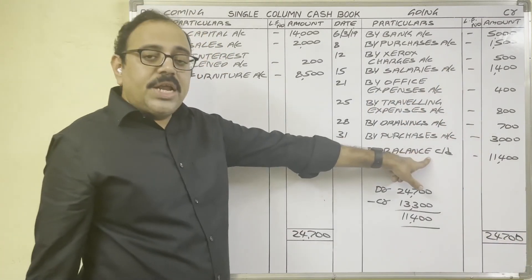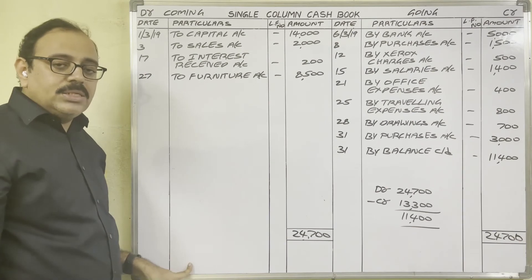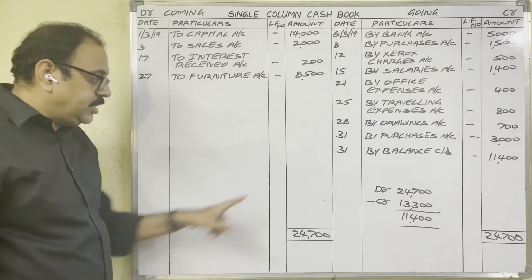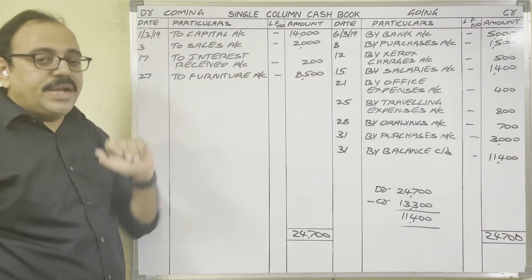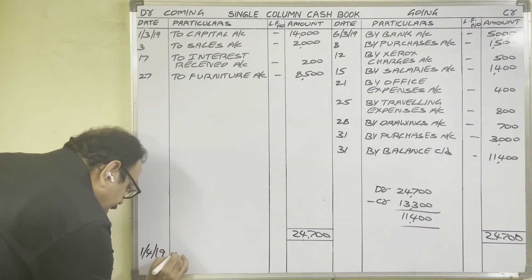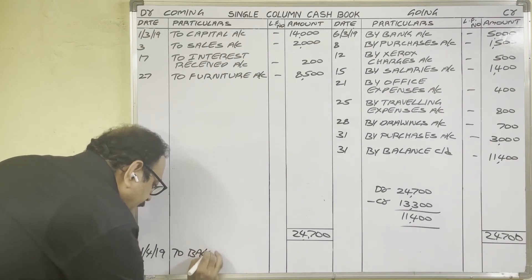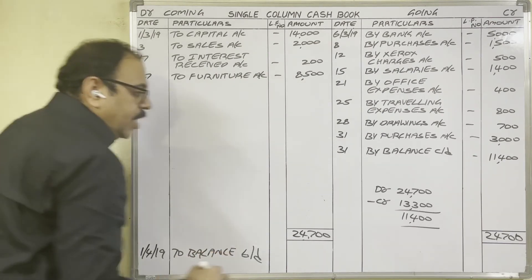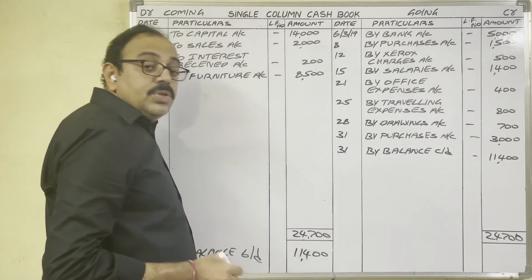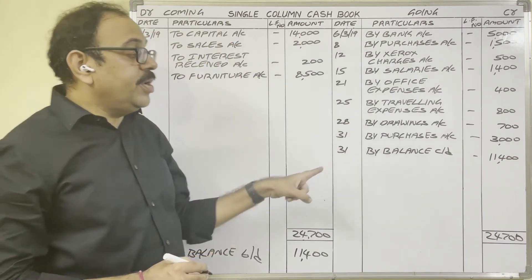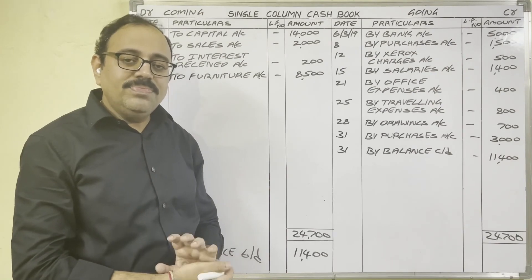Since balance carried down appeared on the credit side, bring this balance to the debit side. The date should be the next date: 1st April 2019. Write: To Balance Brought Down, 11,400 rupees. This is all about the third problem from the cash book topic. Hope this video is helpful to you. Thank you.